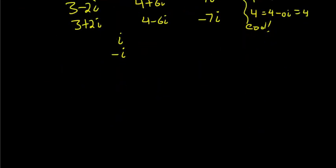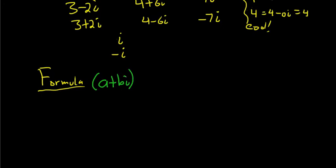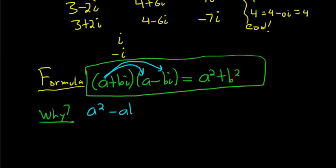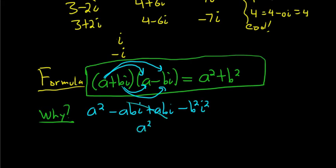Whenever we multiply a complex number by its conjugate, something amazing happens. If we have (a plus bi) times (a minus bi), it equals a squared plus b squared. If you FOIL it out: a times a is a squared, a times negative bi is negative abi, bi times a is plus abi — those cancel — and bi times negative bi is negative b squared i squared. Since i squared is negative 1, the negatives become positive, and all the i's go away. Very useful formula.